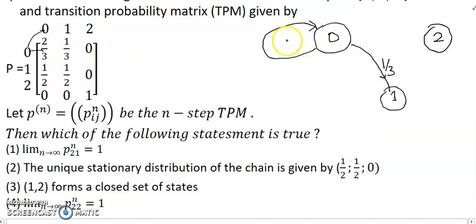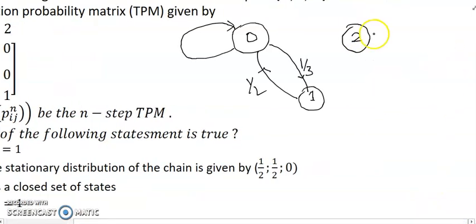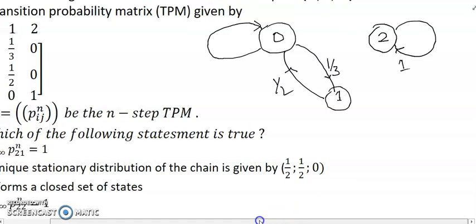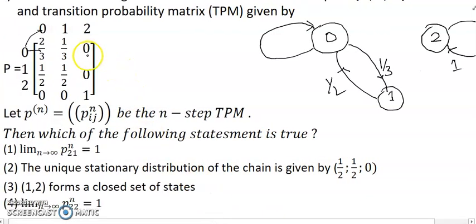From state 1: there is a path back to state 0, and also a self-loop at state 1 with probability 1/2. From state 2: there is only one self-loop, from 2 to 2 with probability 1. This completes the directed graph. Note there is no path from 0 to 2, and from 2 to 0 or 1, since those transition probabilities are 0.